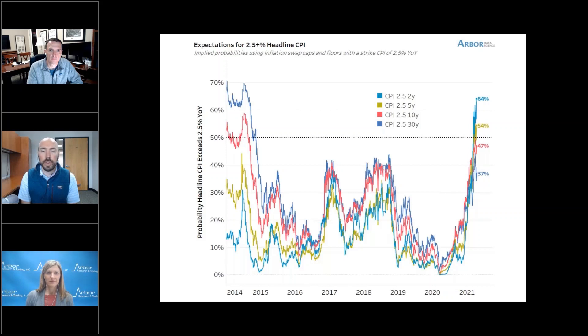If TIPS break-evens suddenly correlate with nominals, and then they become, for example, negatively correlated with equity risk like the VIX, then we have a real story where risk markets need to be concerned. Until then, you can live pretty safely, happily with this equity rally that we've been in. But that's another metric to watch very closely, one that we've talked about a lot on this podcast.